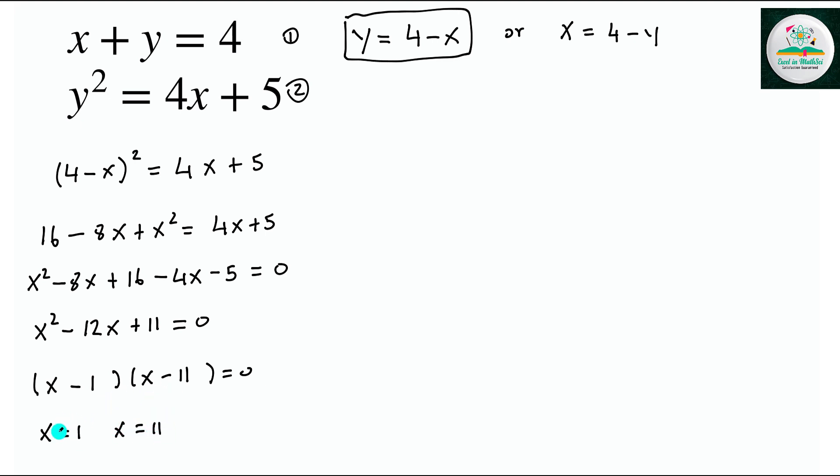Now what we do is substitute each of the values of x into our rearranged equation here to find the y. So when x is equal to 1, y is equal to 4 minus 1, which is equal to 3. And when x is equal to 11, y is equal to 4 minus 11, which will equal negative 7.